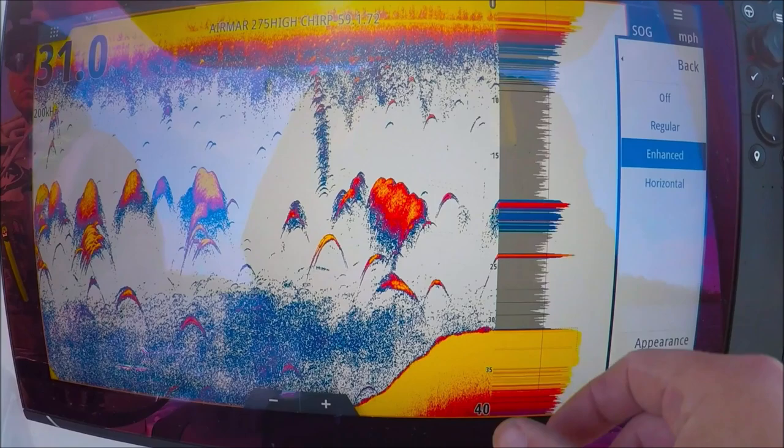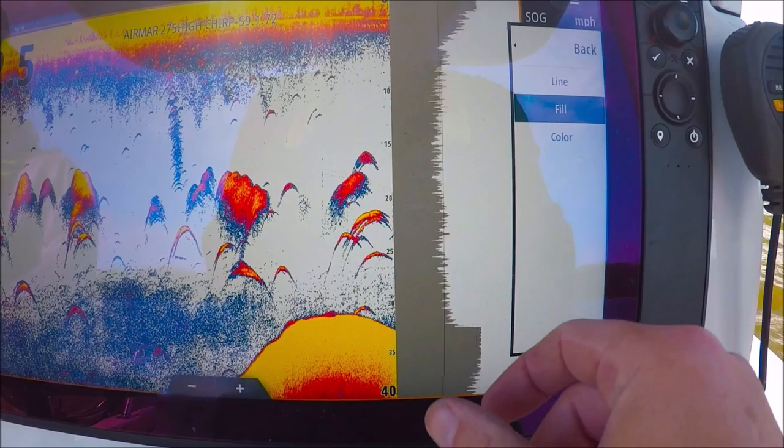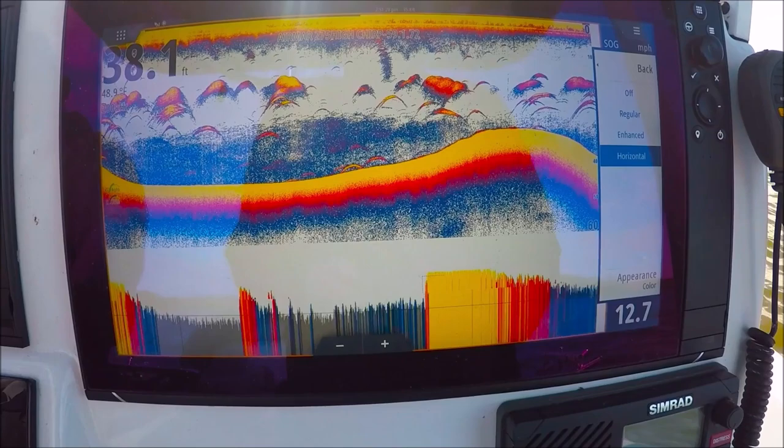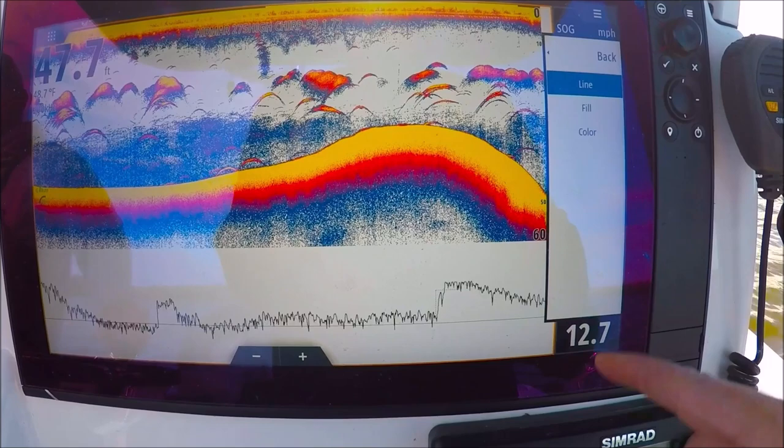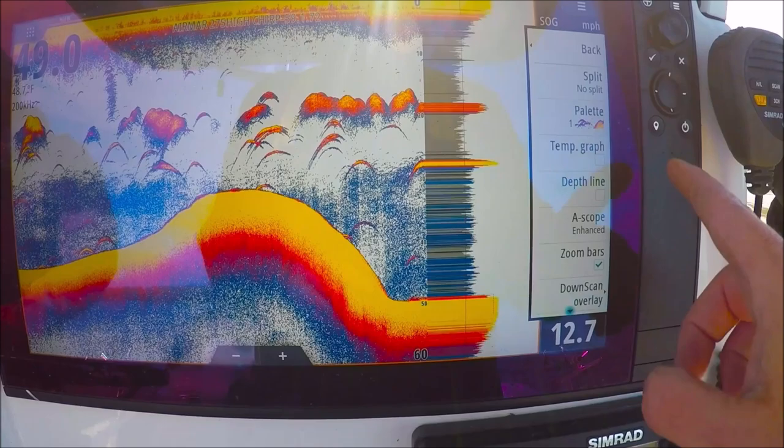We can also change the appearance. We can go to line, which is just the outside line of the A-scope. Fill, which is solid gray. And color, which uses every color of the palette. This is my favorite here. We can also use a horizontal, which does the bottom of the screen. There's the full color. We can change the appearance. Just like we did before. Fill and line. Let's go back. I'll leave it on enhanced. And color.